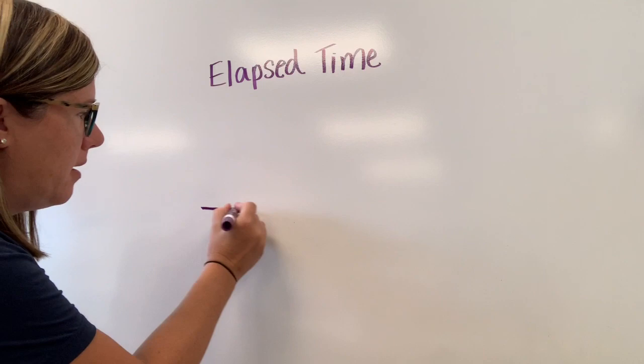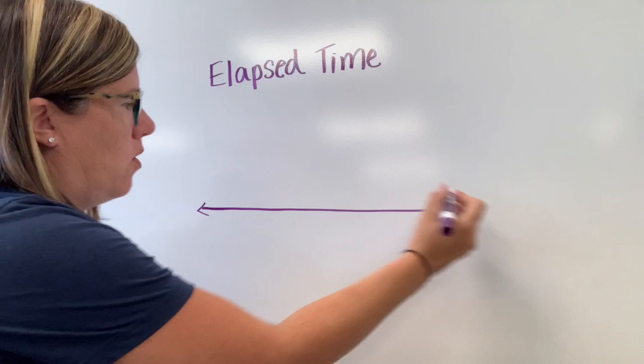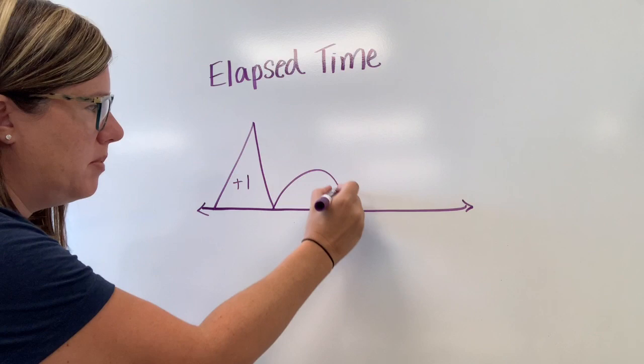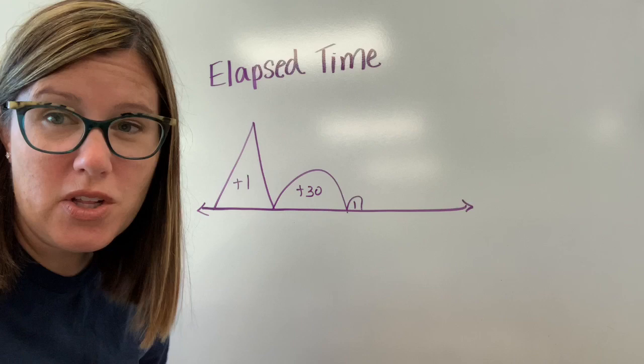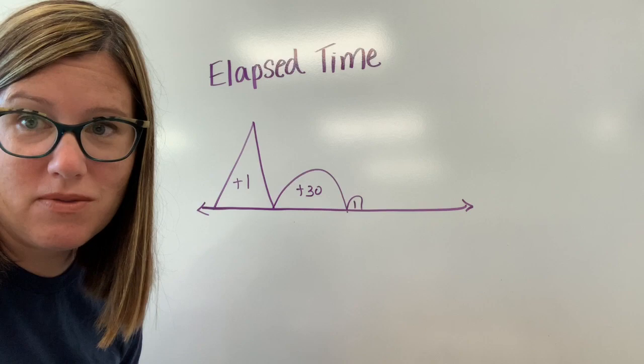You'd start with a line and a mountain would be like an hour. A hill could be like adding 30 minutes and a bump could be like adding one minute or five minutes, a smaller amount of time. We're going to look at this and use a mountain, hill, and a bump to help us find the amount of time that has elapsed.